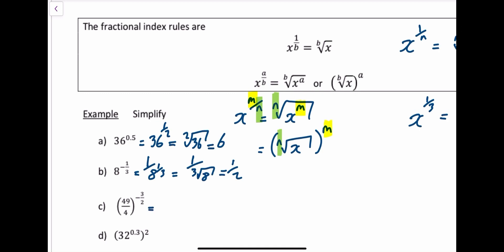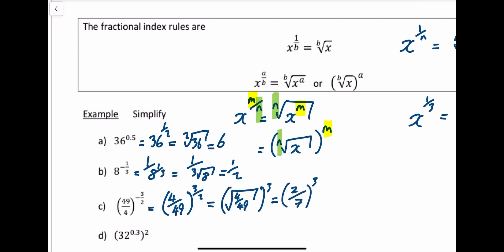The next example: flip it first to take the negative into account, giving 4 over 49. Then that's raised to the power of 2/3, which means you take the square root and then cube it. The square root of 4 over 49 gives 2 over 7, and then cubing both: 2 cubed is 8, and 7 cubed — 7 times 7 times 7 — is 343.